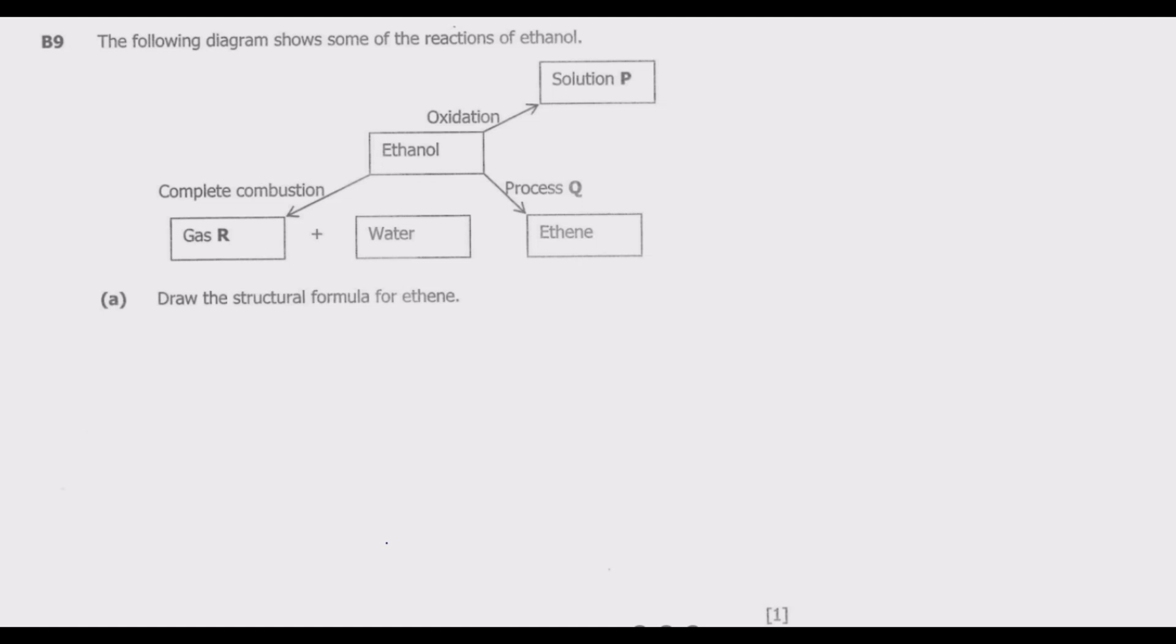Let us look at question B9. The following diagram shows some of the reactions of ethene, including complete combustion, oxidation, and process Q. Question (a) asks: Draw the structural formula for ethene.